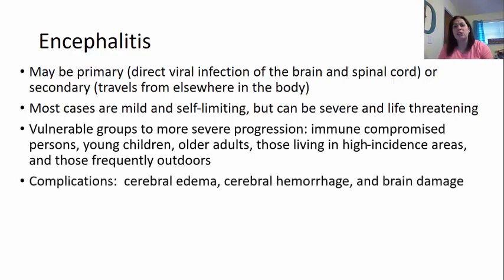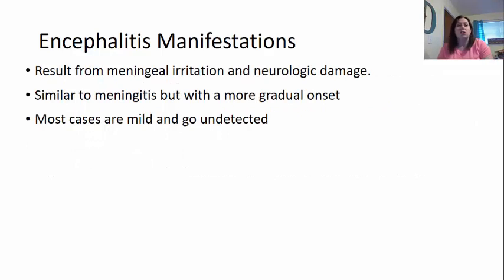Some complications for encephalitis include cerebral edema and cerebral hemorrhage, where the brain starts to bleed. Brain damage is ultimately the culprit of both the edema and the hemorrhaging. Encephalitis can result from meningeal irritation and neurological damage, and could be a secondary cause of meningitis. It is similar to meningitis but with a more gradual onset — it doesn't come on as quickly.